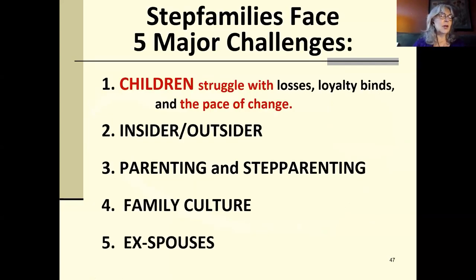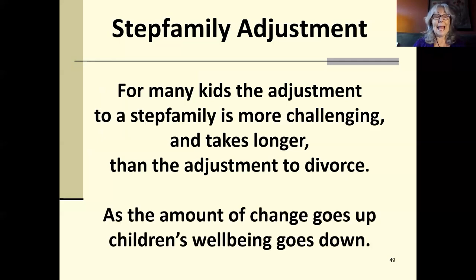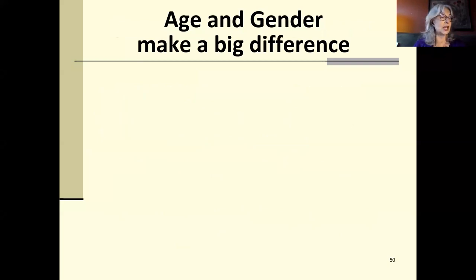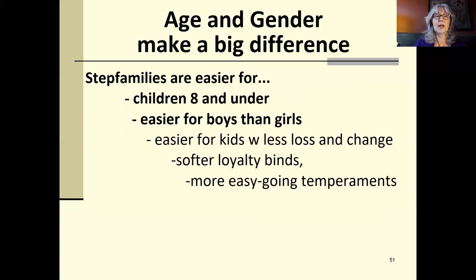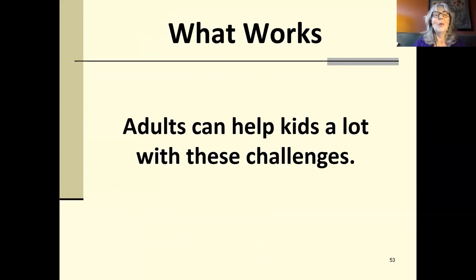Change. It turns out that for many kids, the adjustment to a stepfamily actually takes longer than the adjustment to a divorce. And as the amount of change goes up, kids' well-being goes down. The problem is the adults are thrilled. They naturally want to move forward. And it's often at a pace that's much too fast for kids. It's important to know that age and gender make a big difference. Stepfamilies are easier for kids at eight and under. They tend to be easier for boys than girls. They tend to be harder for girls and especially hard for 12 and 13-year-old girls, which was the age my daughter was when I met my second husband. And I hadn't read this research yet, but boy, did we live it.